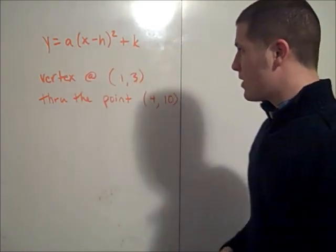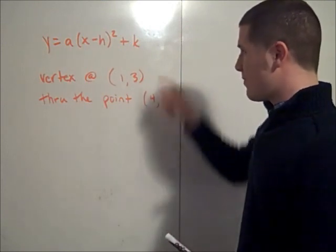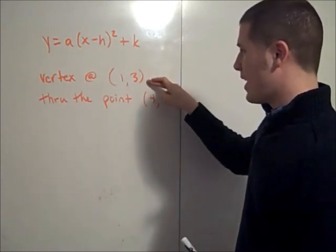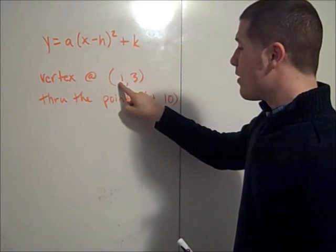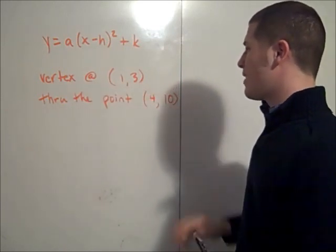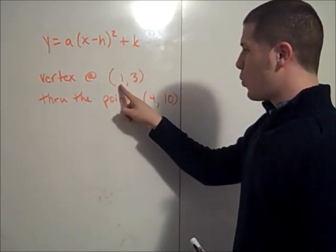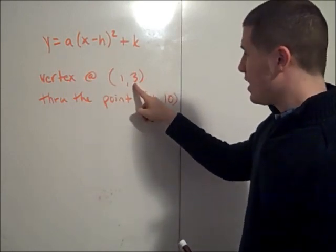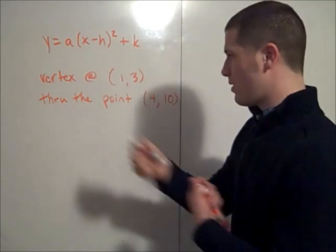We're going to be working with vertex form, and since you're given the vertex, for instance, if the vertex is at (1,3) and it's got to travel through the point (4,10), then h is 1 and k is 3. So I begin by just substituting that in.